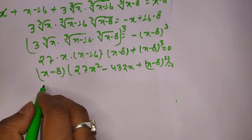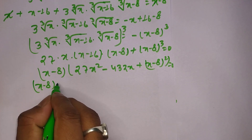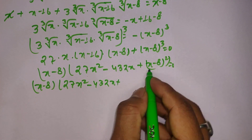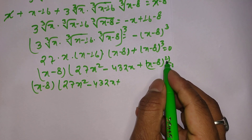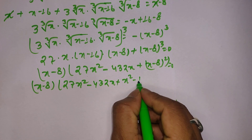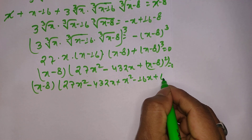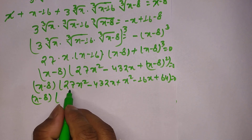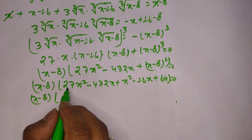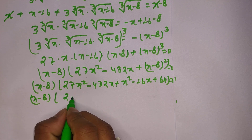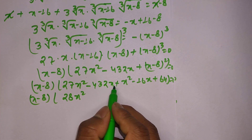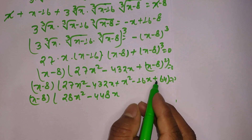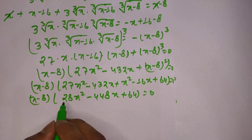We have x minus 8 times [27x² minus 432x plus (x minus 8)²] equals 0. Expanding (x minus 8)² using the formula a² minus 2ab plus b²: that gives x² minus 16x plus 64. Combining like terms: 27x² plus x² equals 28x², and 432x minus 16x gives 448x, with the constant 64. So we have x minus 8 times (28x² minus 448x plus 64) equals 0.